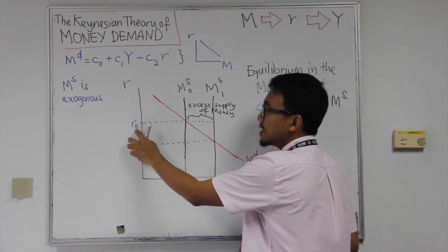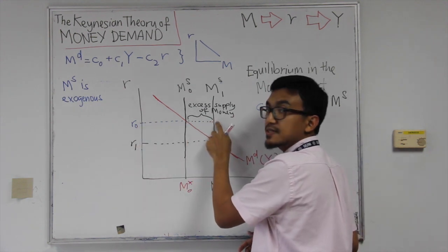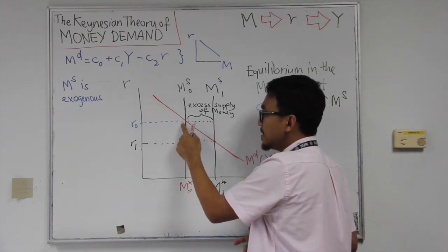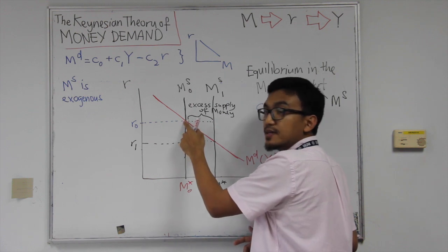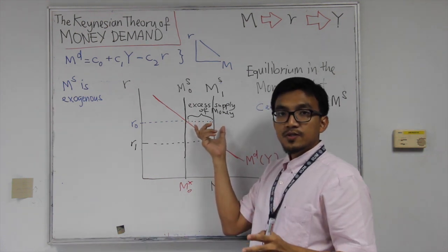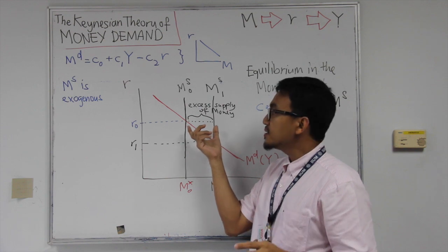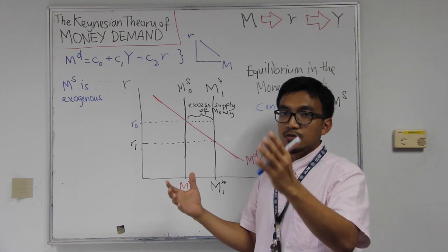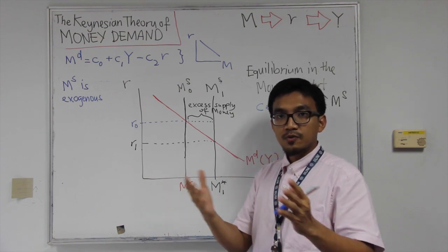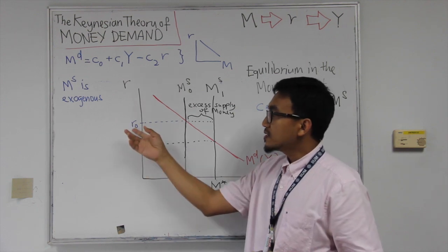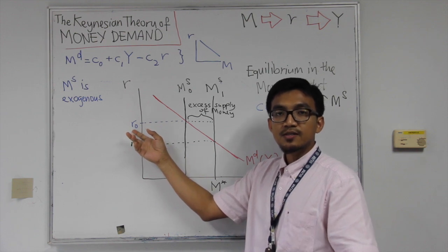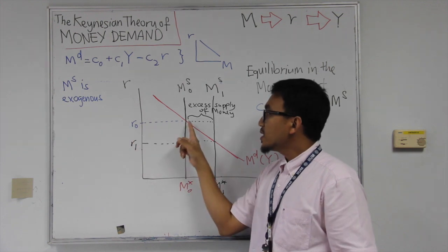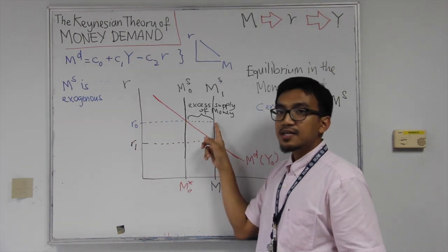At the old interest rate R0, we can see that there is an excess supply of money. Interest rate is high, the supply of money is here but the demand for money is only here. So basically what happens here is that individual consumers, investors, since the interest rate is high, they would rather hold bonds. It would be more profitable to hold bonds because bonds will then pay interest rate. Interest rate is high so you expect interest rate to go down. When interest rate goes down, you expect to get a capital gain. So that's why the demand for money is low while the supply of money is high.